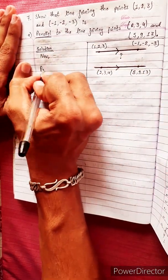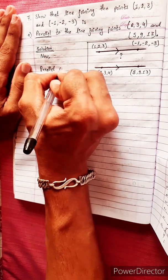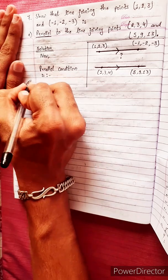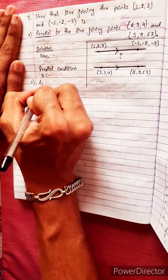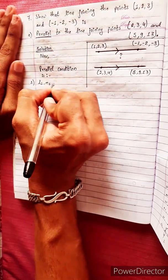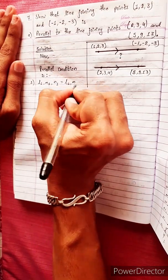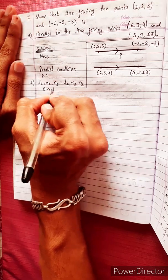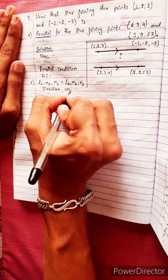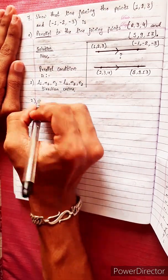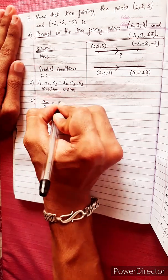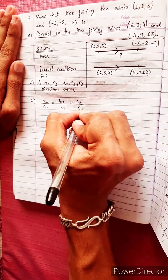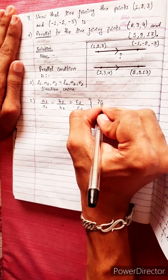The parallel condition is: L1/L2 = M1/M2 = N1/N2 using direction cosines, or equivalently A1/A2 = B1/B2 = C1/C2 using direction ratios. We will use the direction ratio method.